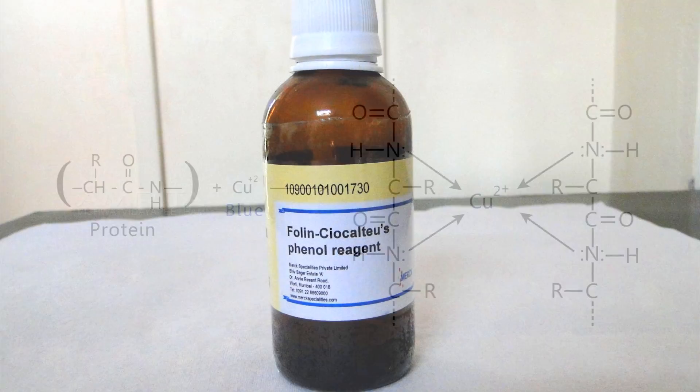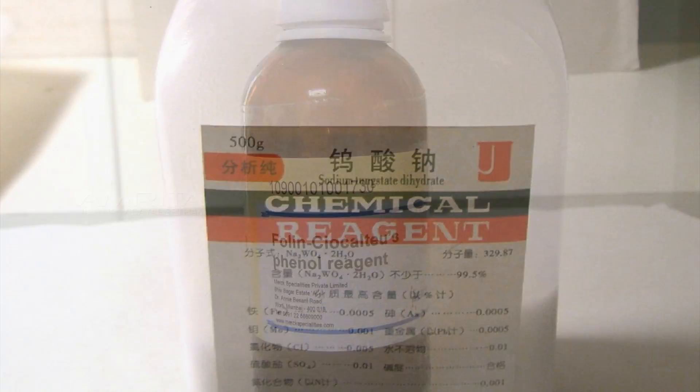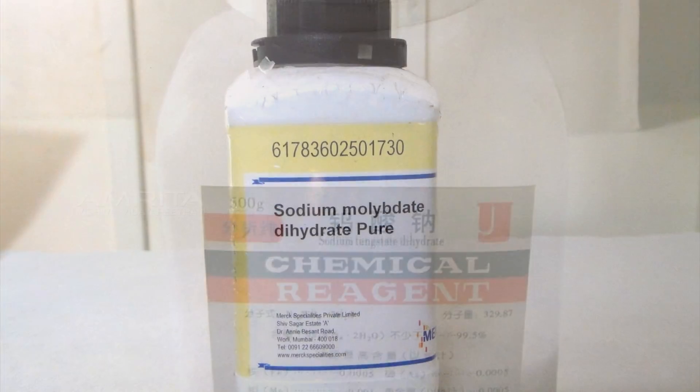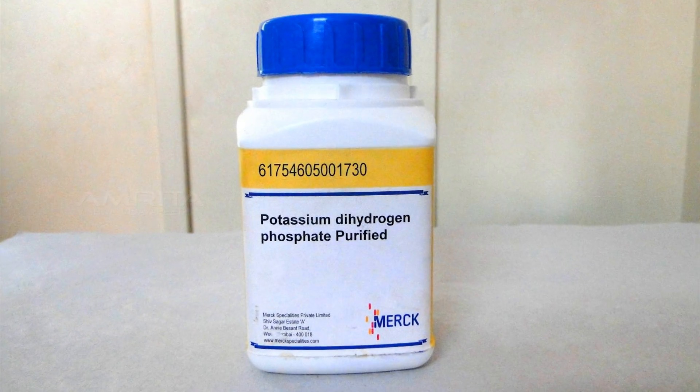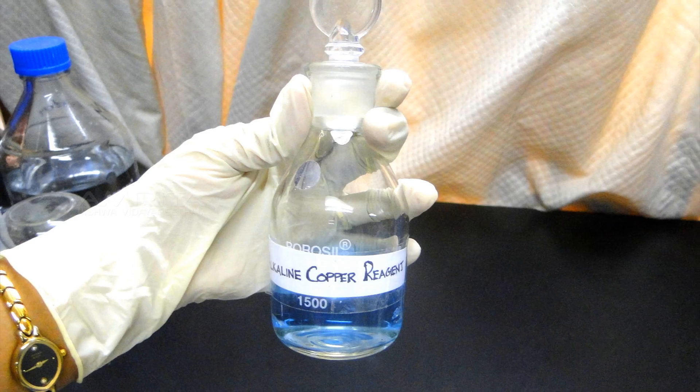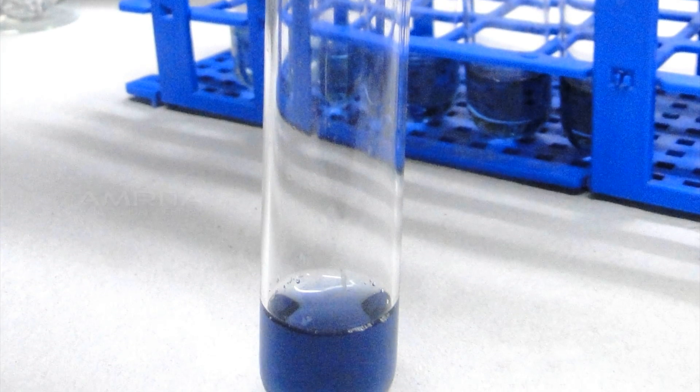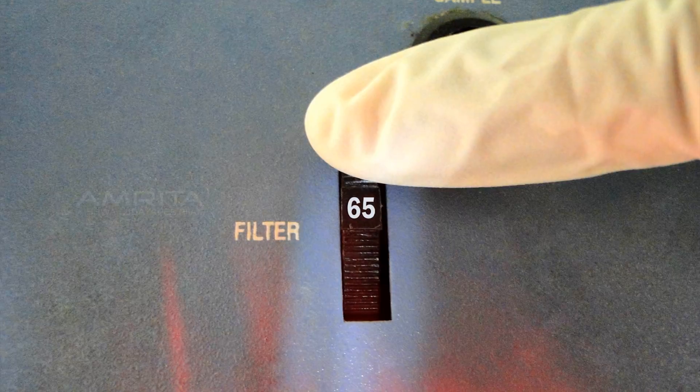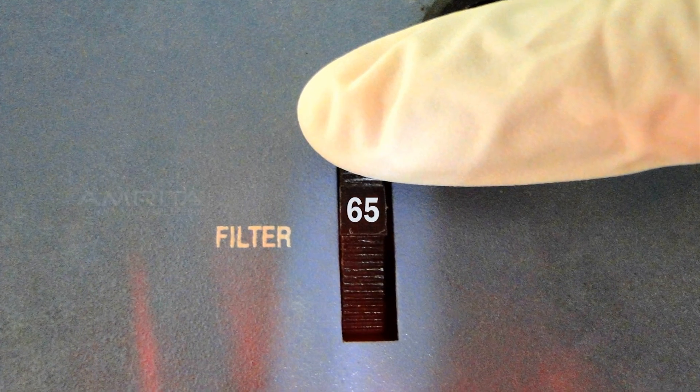Lowry reaction in which the Folin Ciocalteu reagent, which is a mixture of sodium tungstate, sodium molybdate, and phosphate along with the copper sulfate solution. When mixed with the protein, a blue-purple color is produced which can be assessed by measuring the absorbance at 650-700 nm.